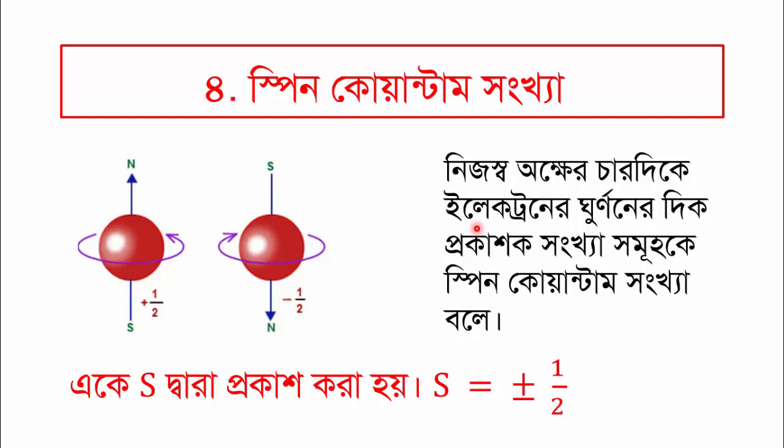In the same way, the spin of the electron is given by the spin quantum number, which is denoted as 's'. The spin quantum number has values of plus half (+1/2) and minus half (-1/2).